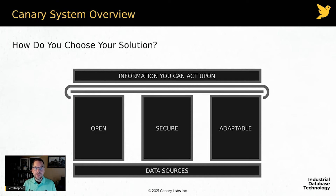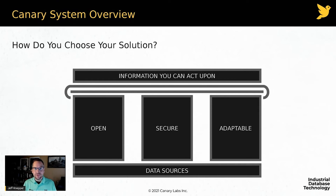And then adaptability. Every organization is different — your process, your architecture, your systems are all different, even if you're in the exact same vertical. In order to do what you do to the best of your ability, the historian solution has to be able to adapt — in the way it's deployed and in the way it's used — to fit your model. If our solution is built on these three pillars of openness, security, and adaptability, based on our 35-plus years of experience, we know that is the winning formula for your success.